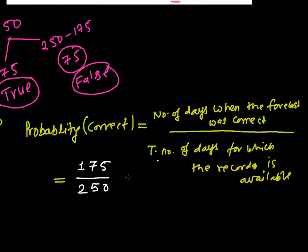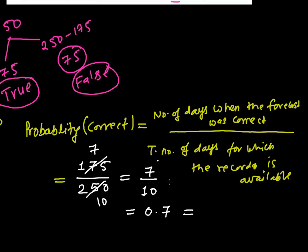So the probability that on a particular day their forecast will be correct is 175 divided by 250. If you simplify by dividing both by 25, you get 7 over 10. In decimal form that is 0.7, and in percentage form — multiplying by 100 — that gives 70 percent. So the probability of getting a correct forecast is 70 percent.